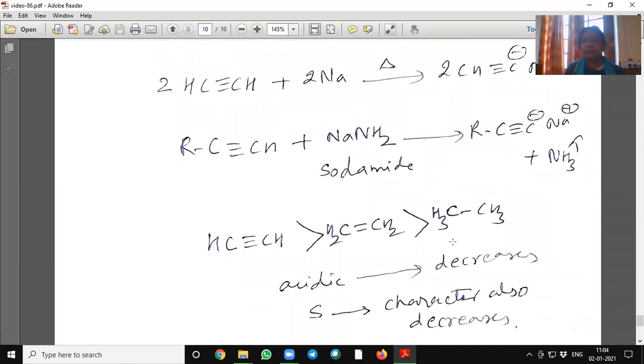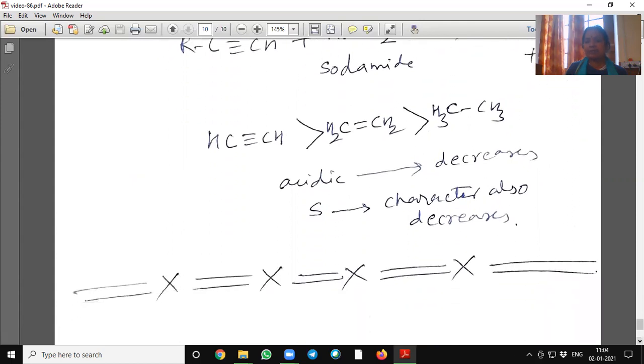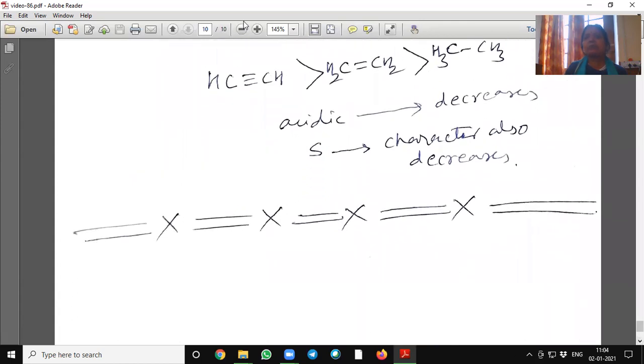Similarly, we can see the acidic nature decreases like acetylene has more acidic in nature compared to ethene compared to ethane. Because s-character also decreases.